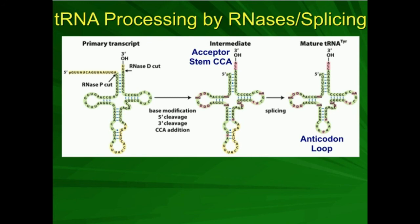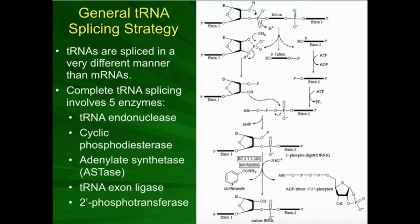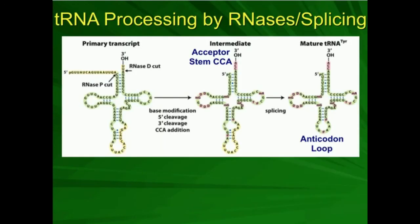The tyrosine amino acid would connect to the 3' OH on that adenosine at the top. Before we really get into how translation works, I want to go into the general strategy for tRNA splicing, which is what we're going to cover in the next video. Make sure to join us in the next video where we talk about tRNA splicing - it's probably the most complicated of all the splicing that we're going to see.